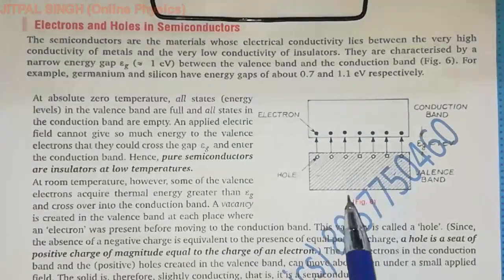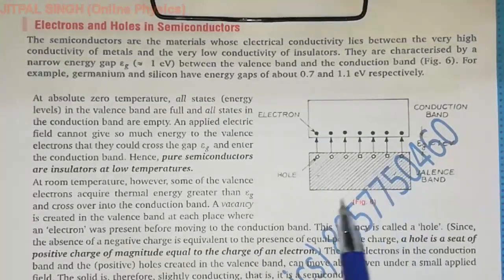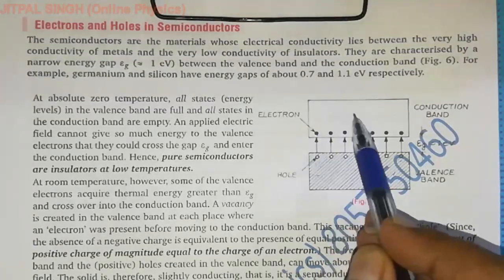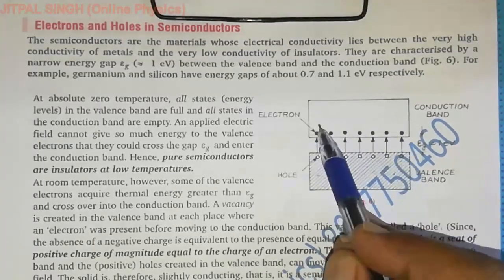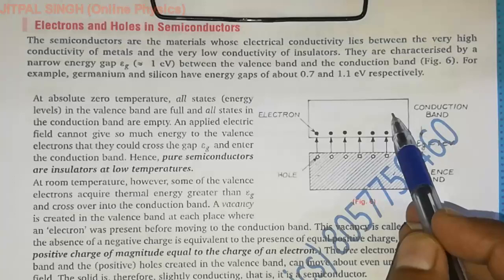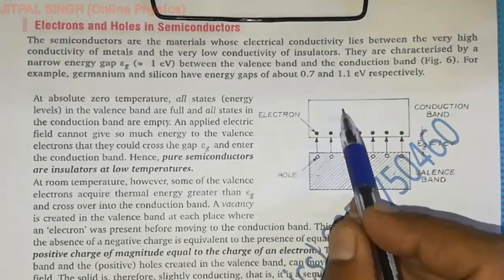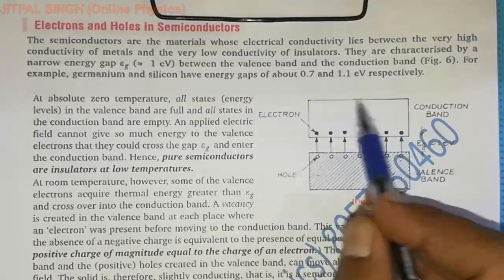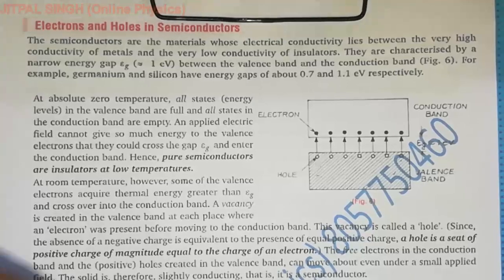When we apply an electric field, there are unoccupied levels available — empty spaces where electrons can move. When you apply the electric field, these electrons will move into the unoccupied levels, and we get a current due to these electrons in the conduction band.